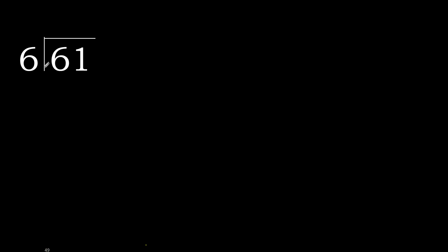61 divided by 6. 6 is not less, therefore we work with 6. 6 multiplied by which number is nearest to 6 but not greater? 6 multiplied by 2 is 12, which is greater. Multiplied by 1 is 6, which is not greater.